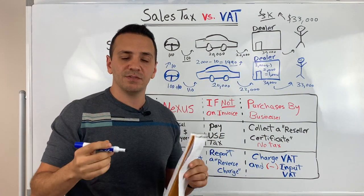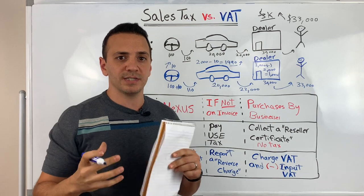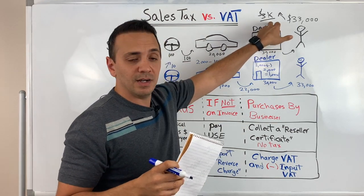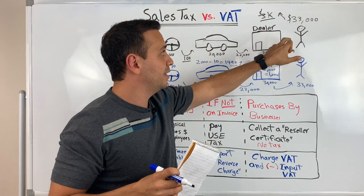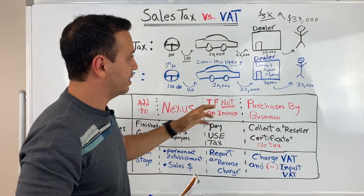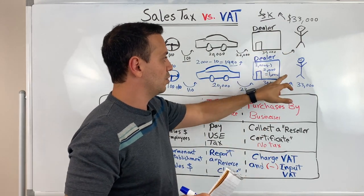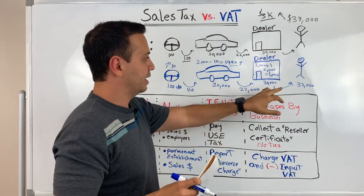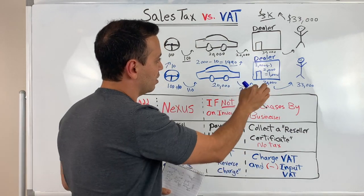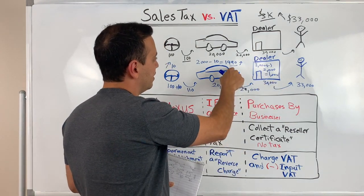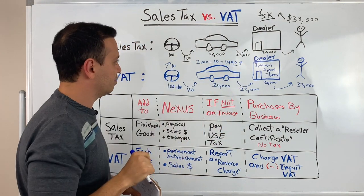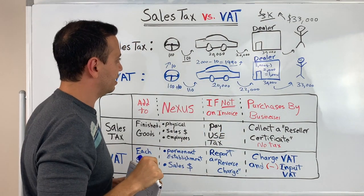Basically, at the end of the day, it works the same way. The government is getting $3,000 in the U.S. in the case of sales tax, and the government here is also getting 3,000 euros — but getting them as 1,000 from the dealer, 1,990 from the car manufacturer, and 10 euros from the steering wheel manufacturer.